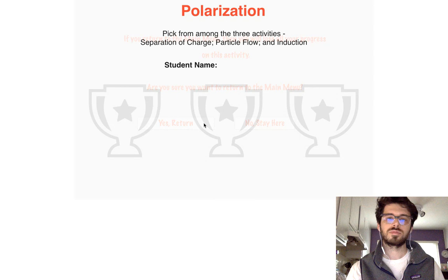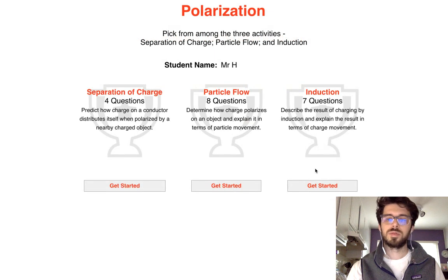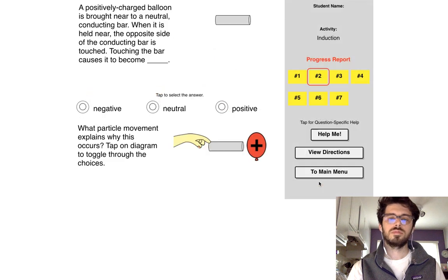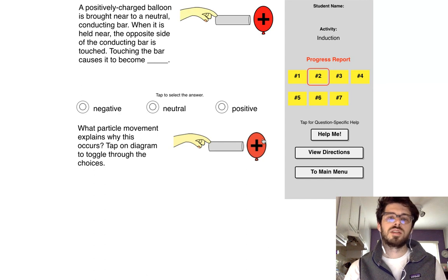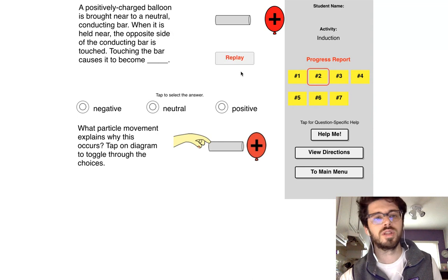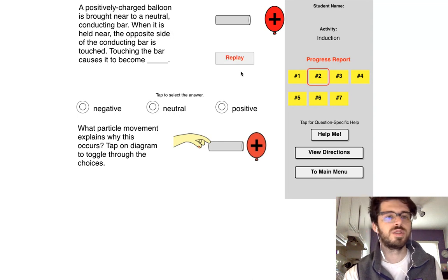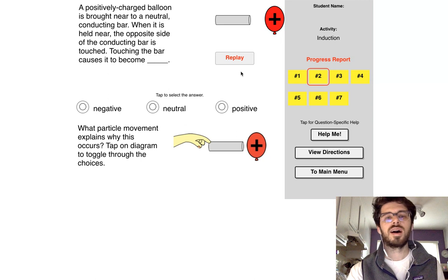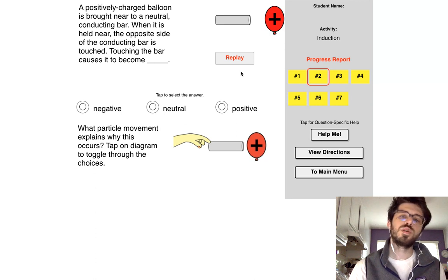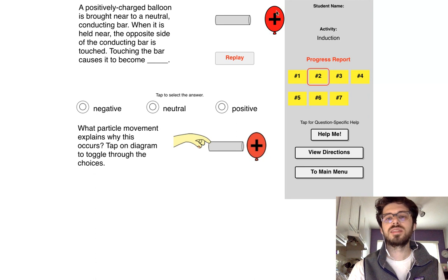Let's do the last one, induction. Notice there's a little flash going on up here. A positively charged balloon is brought near to a neutral conducting bar. When it's held near, the opposite side of the conducting bar is touched. Touching the bar causes it to become what?